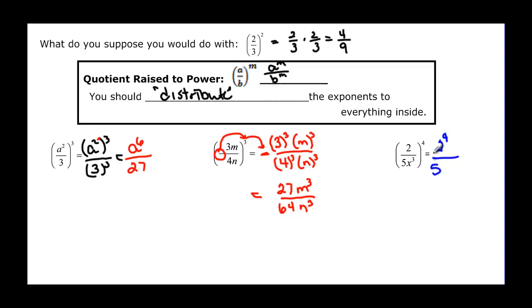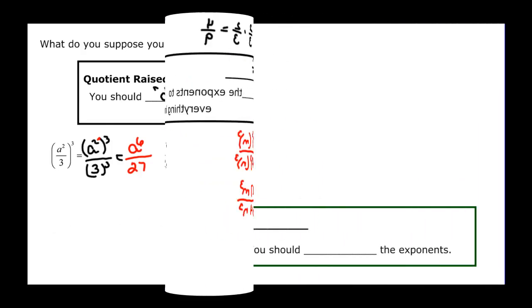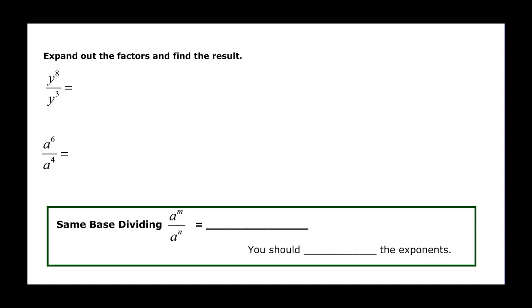And finally everything inside gets raised to that power so 2 to the 4th. My base of 5 gets raised to the 4th, my base of x cubed gets raised to the 4th, every factor inside there gets raised to the 4th power. So 2 to the 4th is 16, 5 to the 4th is 625 on the bottom, and then x cubed raised to the 4th power, remember that means that we are going to multiply our exponents, and that gives us x to the 3 times 4 or 12.